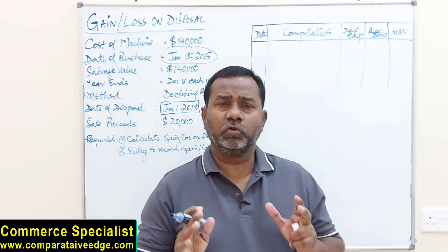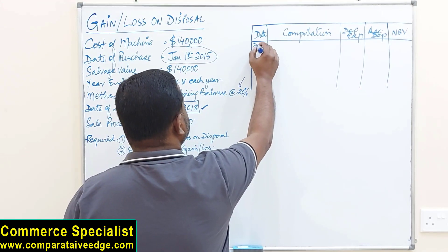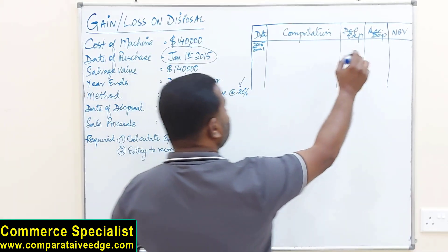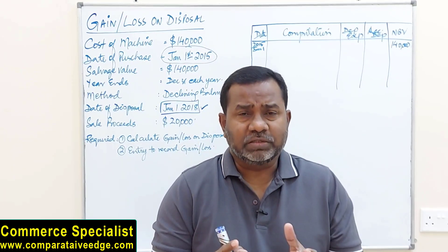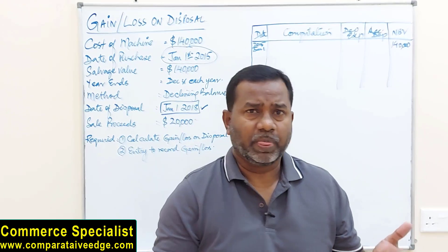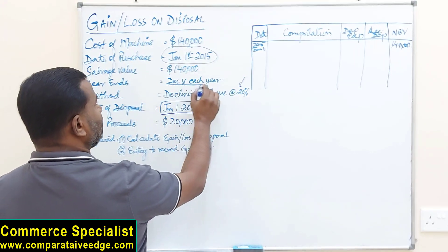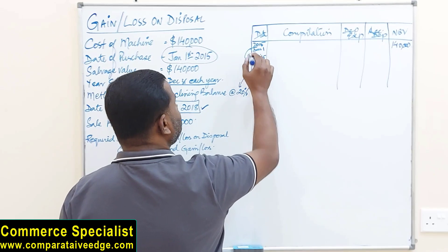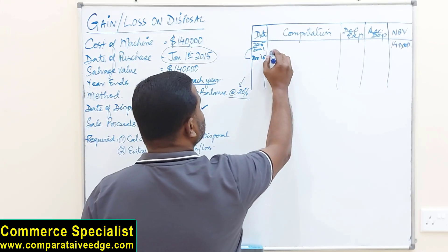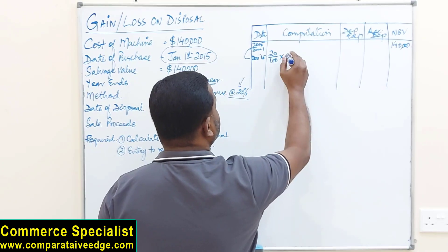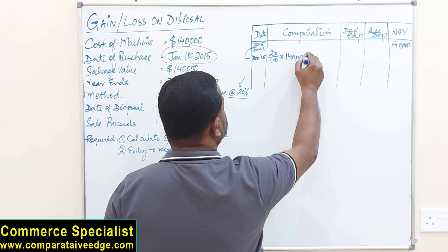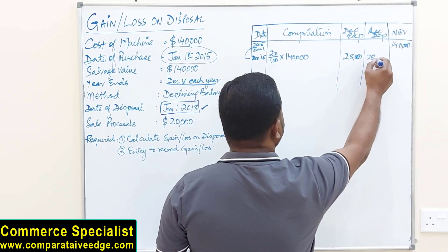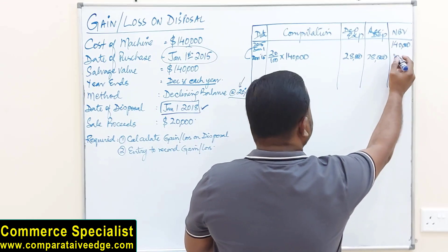The very first step is to write the date of purchase, which is January 1st 2015. When you write the date of purchase, immediately write the cost of the machine in the net book value column, which is 140,000 — because on the date of purchase the cost and net book value are the same since there is no depreciation yet. The year ends on December 31st, so on December 31st 2015, from January to December is one year. Under declining balance method: 20/100 × 140,000 = 28,000 depreciation. Subtracting 28,000 from 140,000 gives a net book value of 112,000.